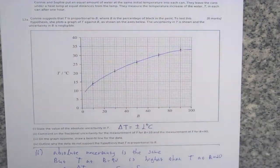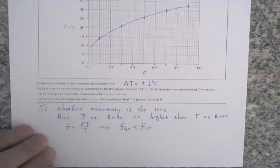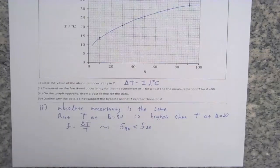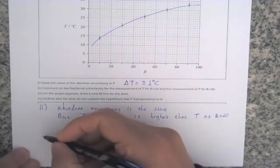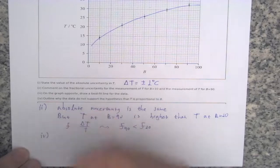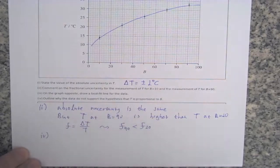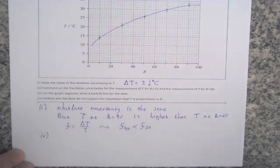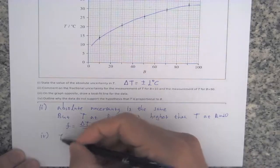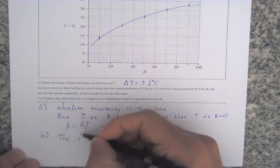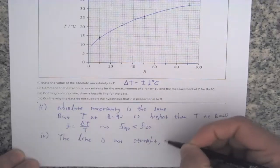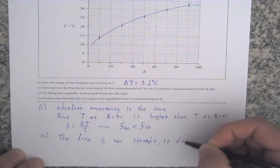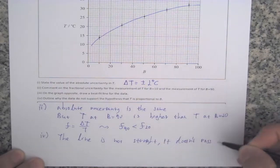Number 4: outline why the data do not support the hypothesis that T is proportional to B. In order to be proportional, you need a straight line that passes through the origin. Here, the line is not straight and also it doesn't pass through the origin.